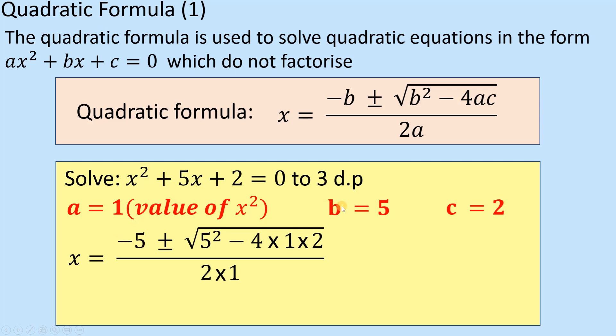You've got minus b, that's minus the value of 5, plus or minus b², minus 4ac, all over 2a. I've just put all the numbers in there.